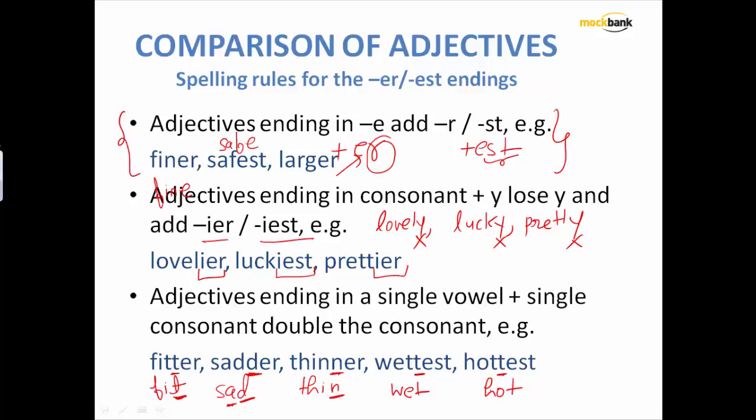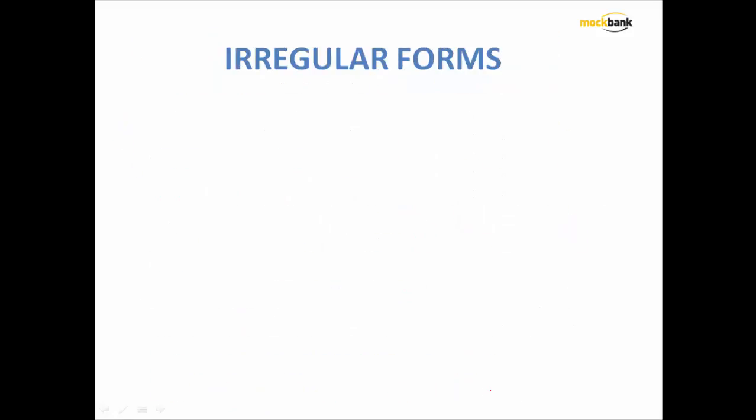So what is this third rule? If your adjective is ending with a consonant and the second last alphabet is a vowel, while making comparative or superlative degree of these adjectives, the last letter will be added one more time.